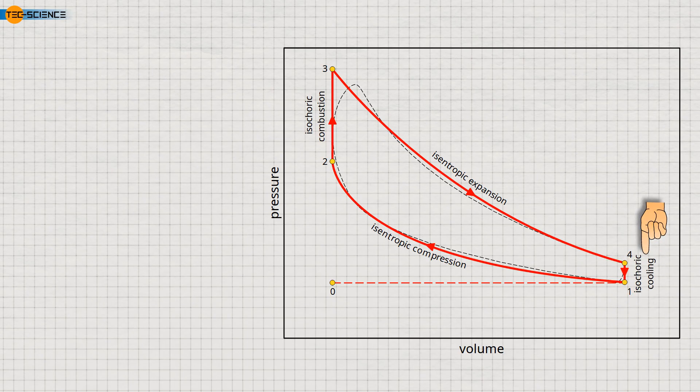Note that in the ideal auto cycle, the state change from 4 to 1 represents the actual charge exchange. To avoid confusion, the idealized charge exchange should not be added to the diagram; therefore, it is shown only as a dashed line.